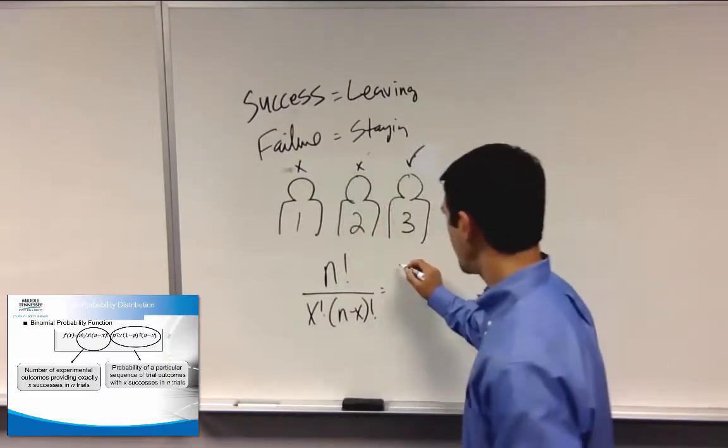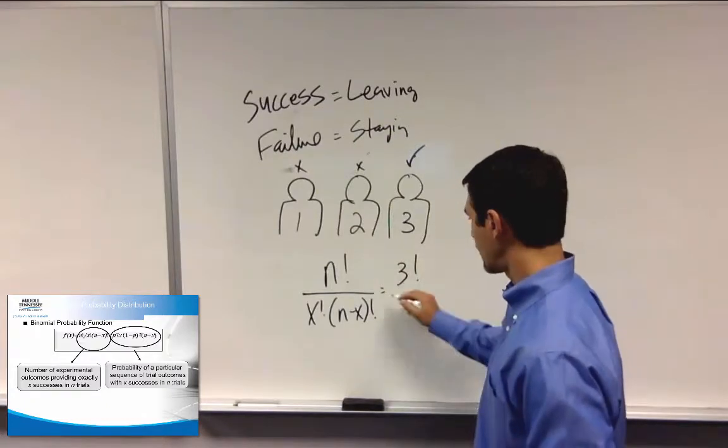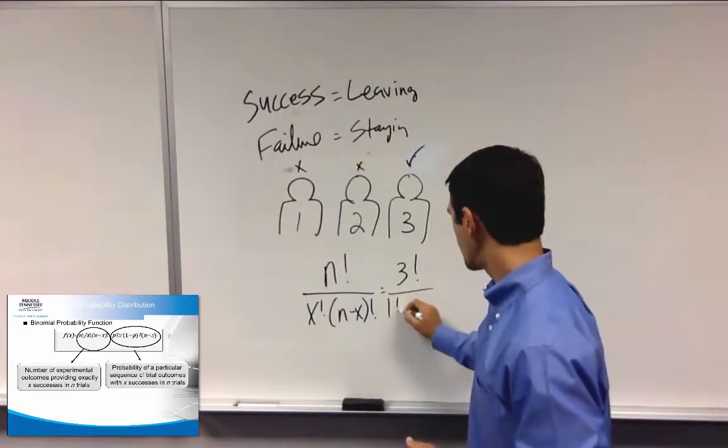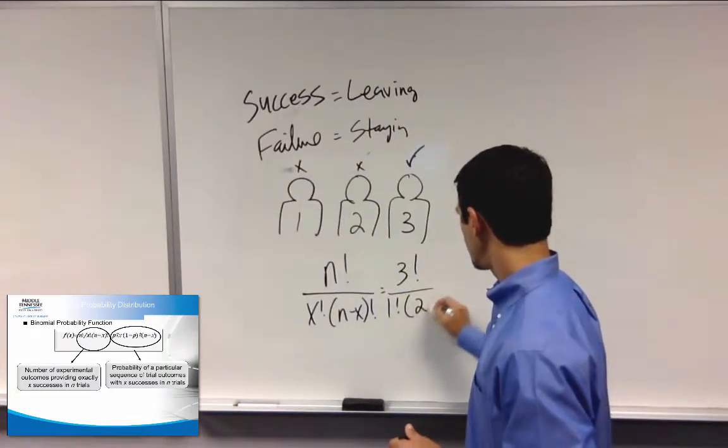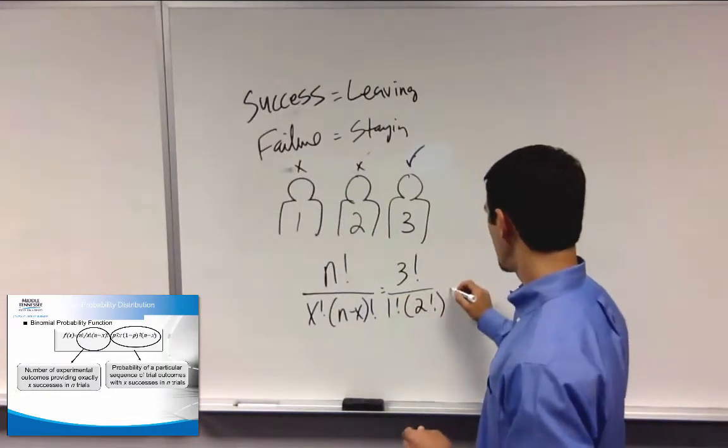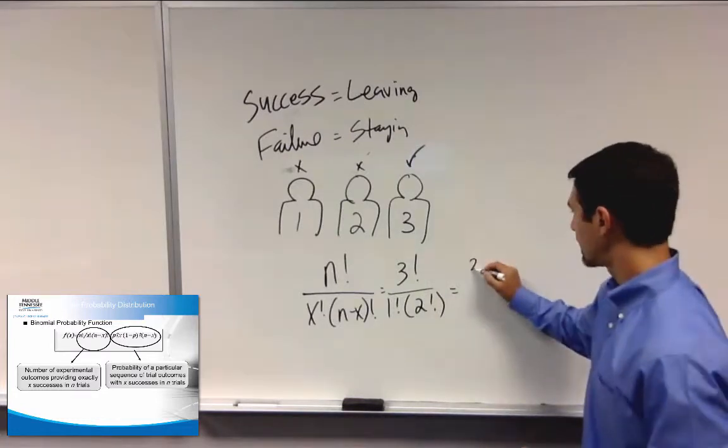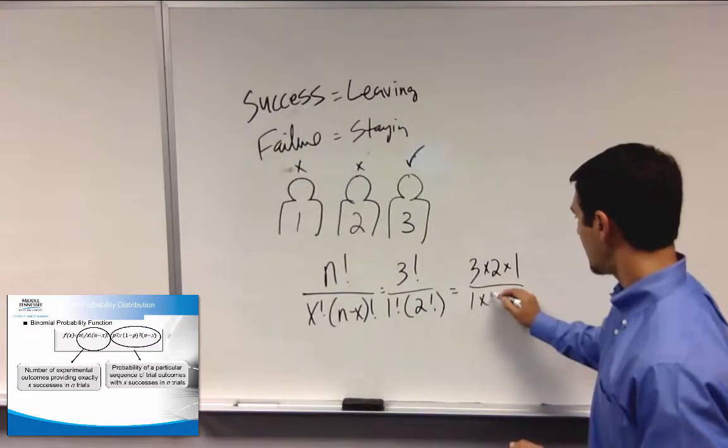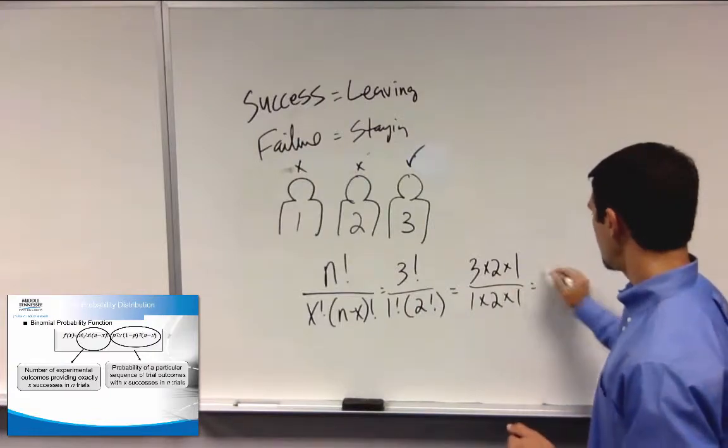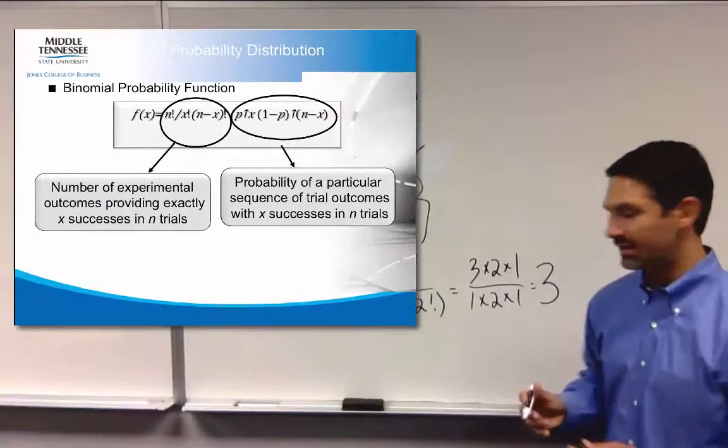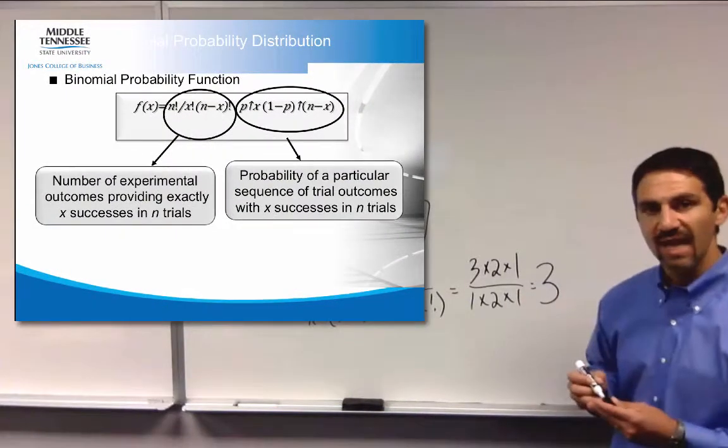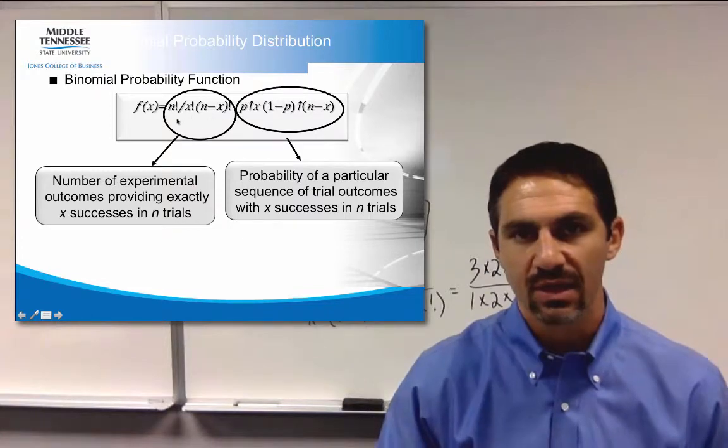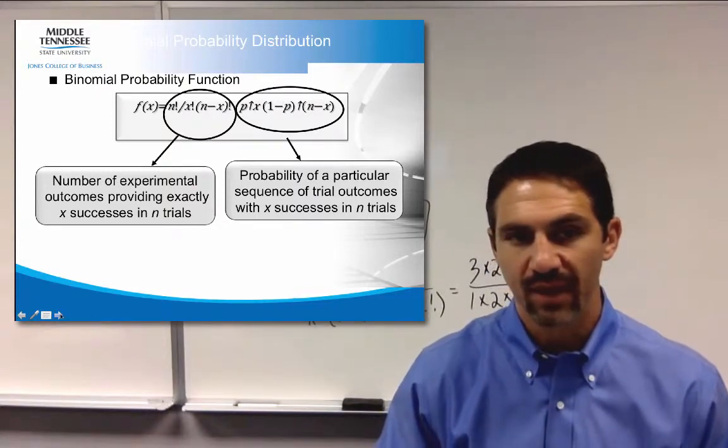So what is that? That would be three factorial over, and again, we're talking about one success, two failures. So that's one, and then two, factorial here. So what does that equal? That's three times two times one over one times two times one equals three possible combinations. So that's what that's referring to when you see the combinations. So this right here is number of combinations.